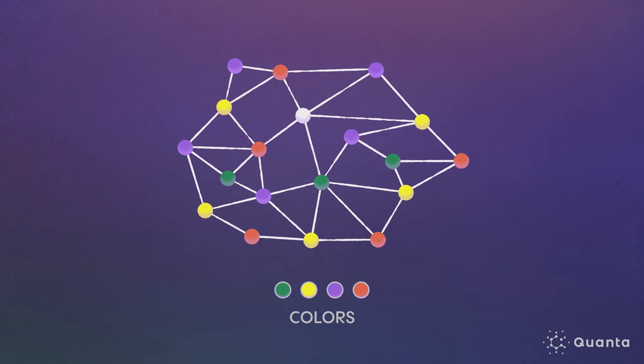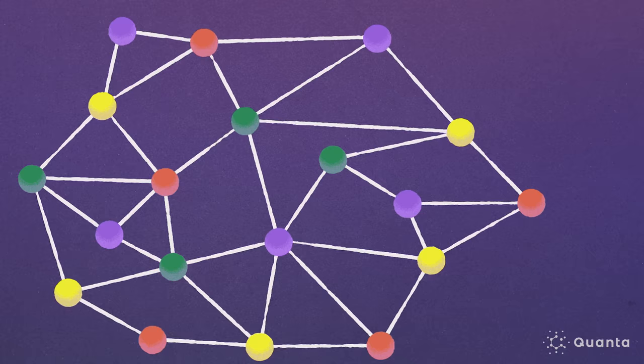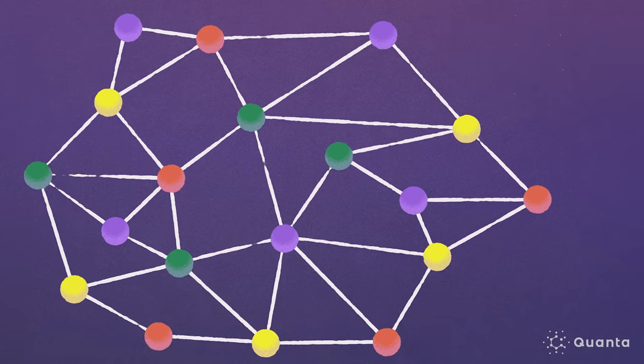Kemp then created a method for recoloring the graph to free up a color for the remaining vertex. This allowed him to recolor it with four colors again. This showed that a minimal counterexample, the smallest possible graph that needs five colors, doesn't exist. That meant the four color theorem must be true.